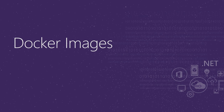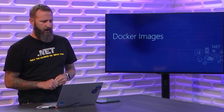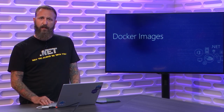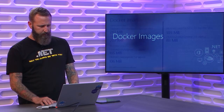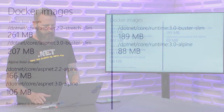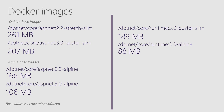Moving on to Docker images — containers are really at the core of building microservices. Some improvements in .NET Core 3.0 make inner-loop development more efficient. Making images smaller is very important. Our Debian-based images went from 261 MB under 2.2 down to 207 MB. Alpine images went from 166 MB down to 106 MB — a significant reduction for pulling images and scaling out. The runtime-only Alpine image is down to just 88 MB, which is great when scaling out on a cluster during traffic spikes.